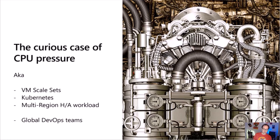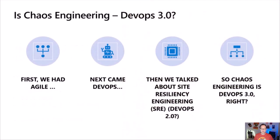Looking at the individuals — the site reliability engineers themselves — all of a sudden instead of following the DevOps culture concept in one location, you need to still collaborate but remotely across different regions. So it's not just about technical challenges in keeping workloads up and running, but also about keeping the team itself up and running. Is chaos engineering DevOps 3.0? Initially we had Agile with ITIL, then DevOps, then site reliability engineering as DevOps 2.0. Chaos engineering — is it DevOps 3.0? Well, yes and no. But first, about the tooling.